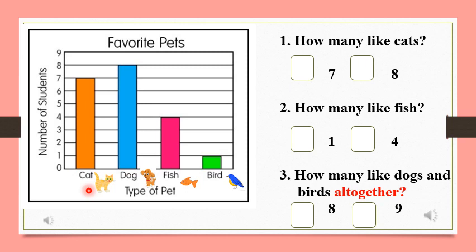Let's see. First you find the cat, then move all the way up to the top of the bar, and now move across the line. How many students like cats? Good job, seven students like cats. Let's put a tick in the box. Good job.